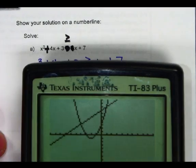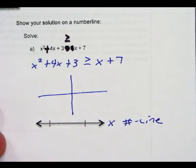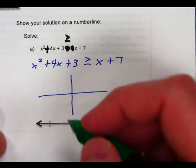When we push graph, we're going to see the shape, and this is what it looks like. So we have a parabola and a line. So then what we do is we go to our paper, and we sketch out our parabola and our line.